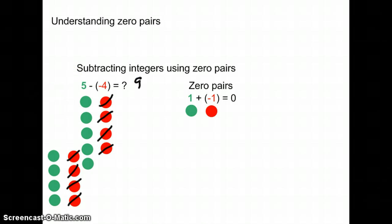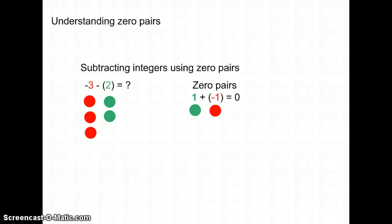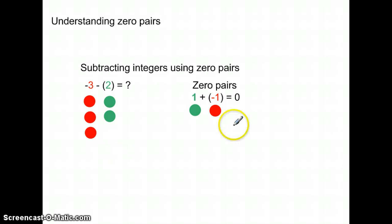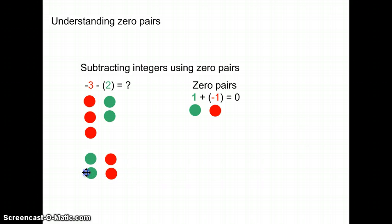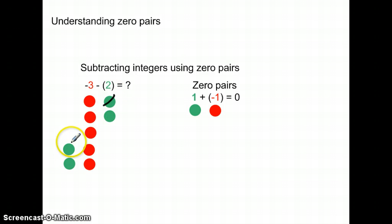Let's take a look at one more example. I have 3 negative tiles and I'm taking away 2 positive tiles. Using zero pairs, how many zero pairs would I bring in? I'm hoping you're saying 2 zero pairs, because I need 2 positive tiles to take away from. So if I take away 2 positive tiles, I am left with 5 negative tiles.